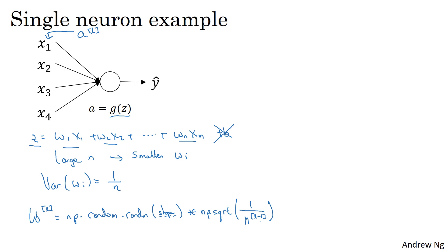It turns out that if you're using a ReLU activation function, then rather than 1 over n, it turns out that setting the variance to 2 over n works a little bit better. So you often see that in initialization, especially if you're using a ReLU activation function.